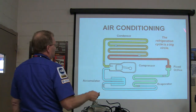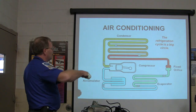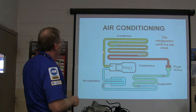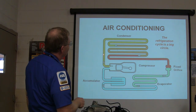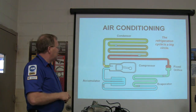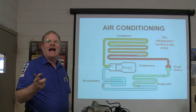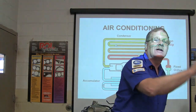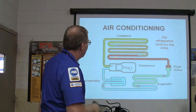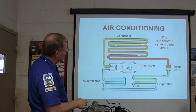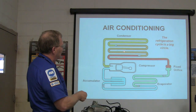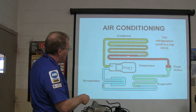Looking at the AC system diagram: you've got your compressor with pistons, and a fixed orifice tube. Coming out of the compressor, the refrigerant is high-pressure gas — that's your discharge line going to the condenser in front of the radiator. As it goes through the condenser, it's condensing and giving off the heat it picked up in the evaporator. It comes out of the condenser as high-pressure liquid, and it's usually hot.